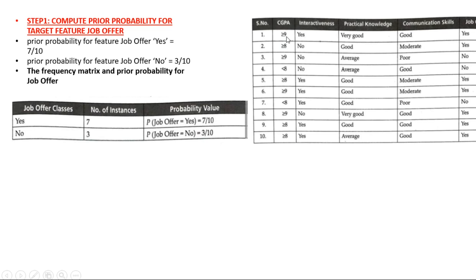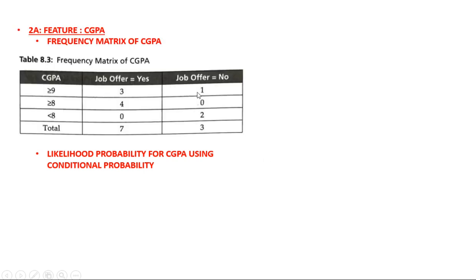Similarly, for CGPA ≥ 8 and less than 8, fill in how many times job offer was yes and how many times no, then take the total. This gives our frequency matrix for CGPA. Next, find the likelihood probability — write down all three values of CGPA, with columns for probability of job offer yes and probability of job offer no.